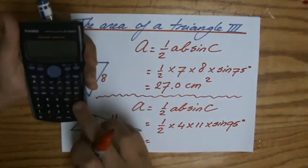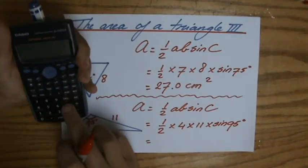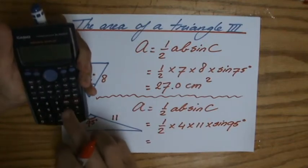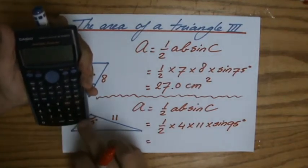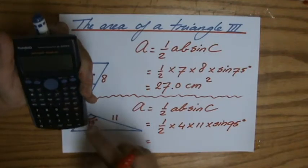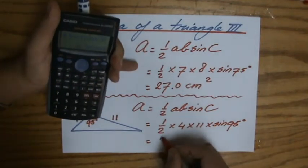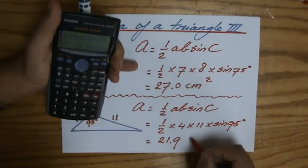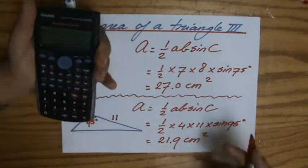grab my calculator: 0.5 times 4 times 11 times the sine of 95 degrees equals 21.9. And again, let's say centimeters, centimeters squared.